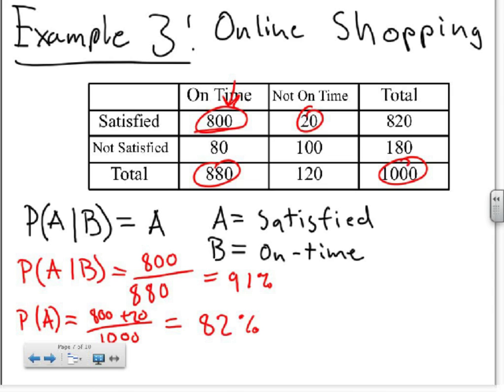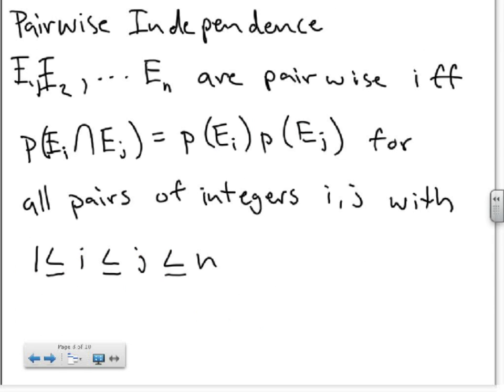There are also two other kinds of independence. The first one is pairwise independence. And this basically is dealing with when you have more than two events. As you can see here, if you have the events e1, e2, all the way to e sub n, those events will be pairwise independent if the probability of the intersection of those events equals the probability of the product of those events, given that i and j are pairs of integers between 1 and n. This is basically saying that if the intersection of two probabilities equal the probabilities multiplied together, then those two events, i and j, are going to be pairwise independent.